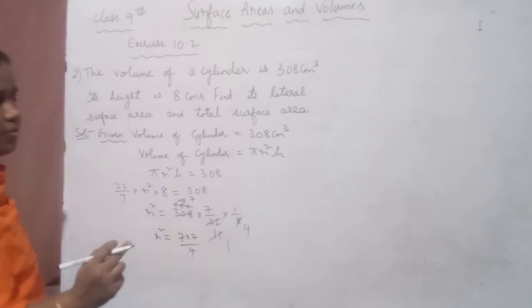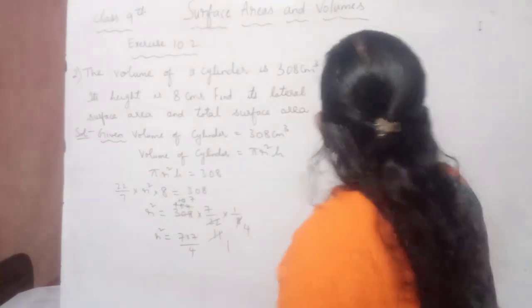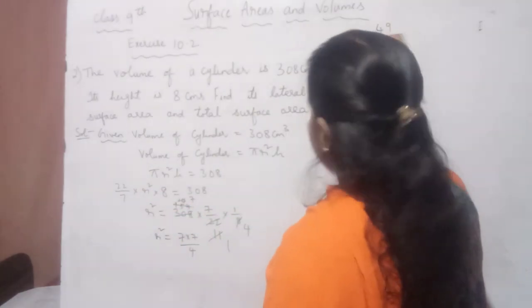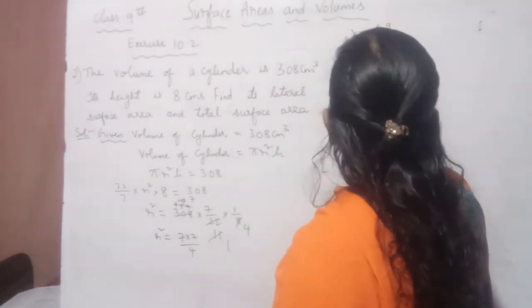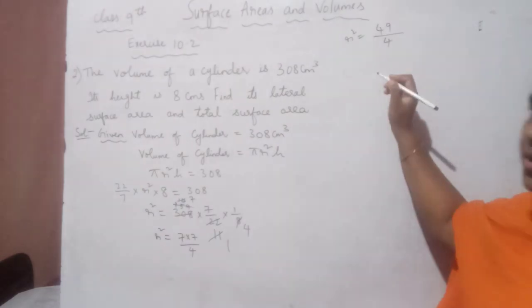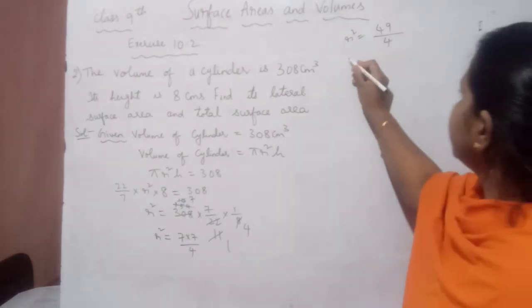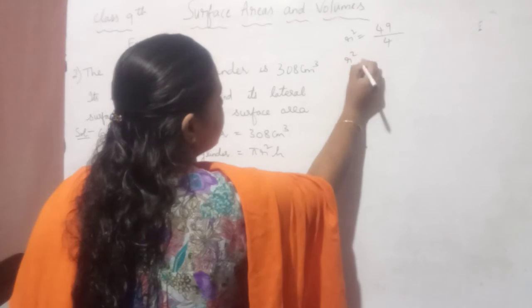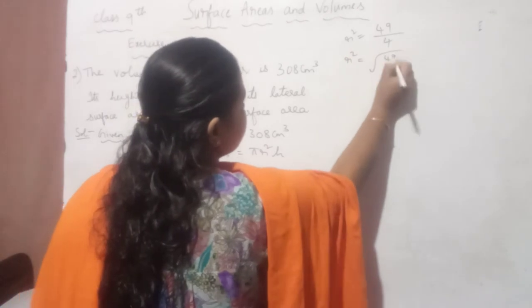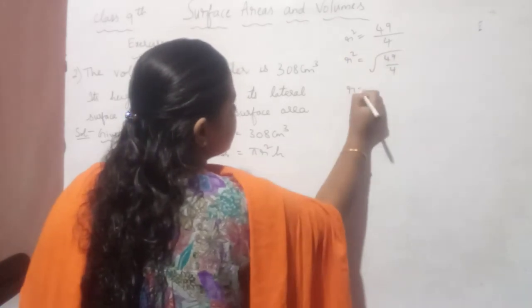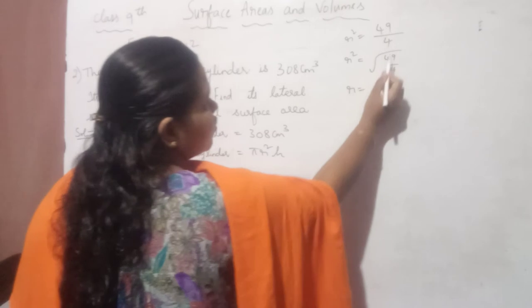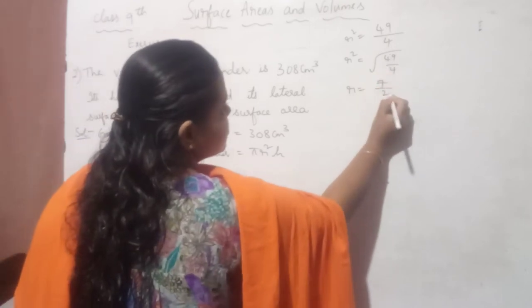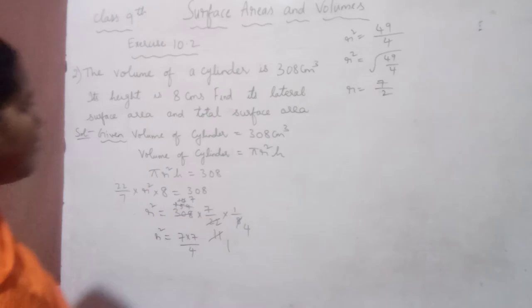From this we want the value of R. R² = 49/4. Taking the square root: R = √(49/4) = 7/2.